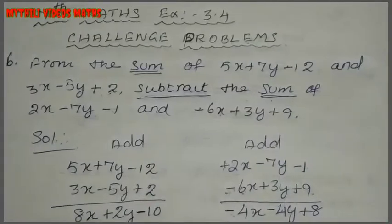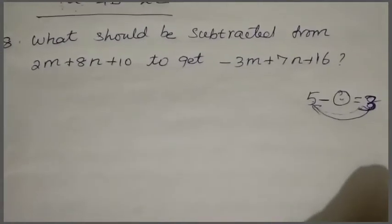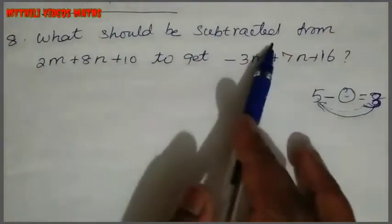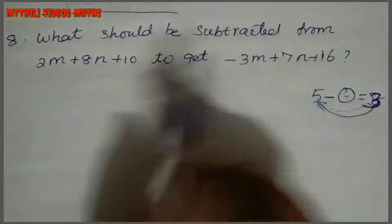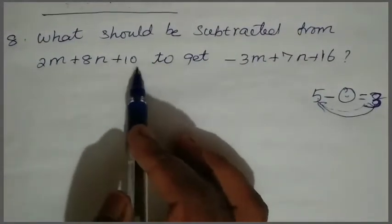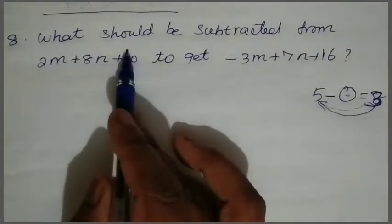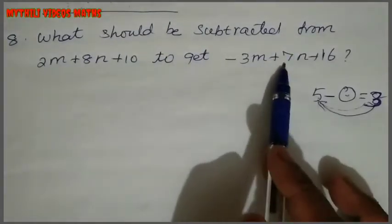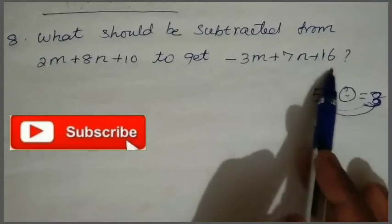So we have already finished 7 sums. Now we will see the 8th sum. What should be subtracted from 2m plus 8n plus 10? So if you have an algebraic expression, what should be subtracted from 3m plus 7n plus 16?